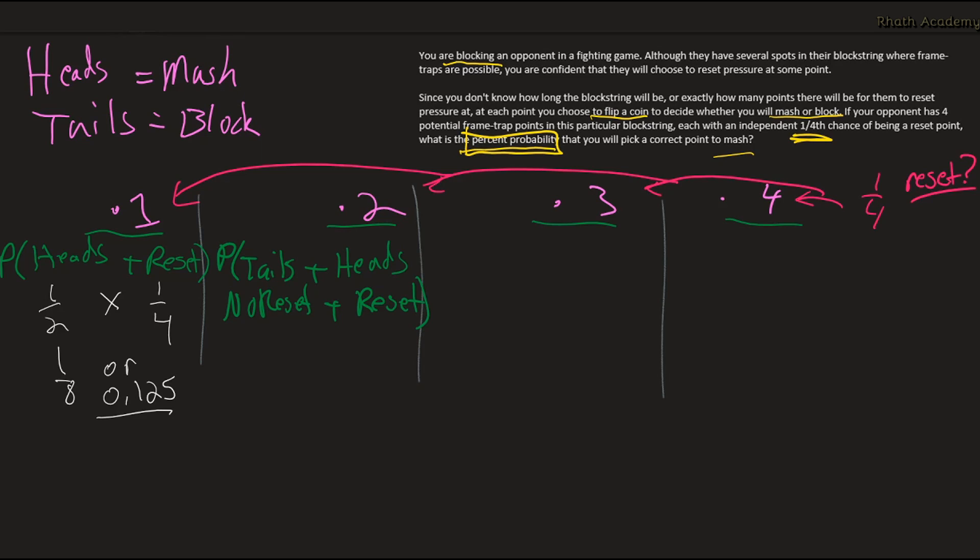So let's solve for the second point now. We're looking for the probability of getting tails and heads. These are both 50% chances. So let's just call this 1/2 times 1/2, or we can just call it 1/2 squared. What about the probability of not getting a reset on the first point? Well, if there's a 1/4th chance of getting a reset, that means that the other 3/4ths is the chance of not getting a reset. So this is what we're looking for. So this is a 3/4th chance, and the chance of getting a reset is just 1/4th. Multiply all these together, and we get 3 over 64, or 0.046875.